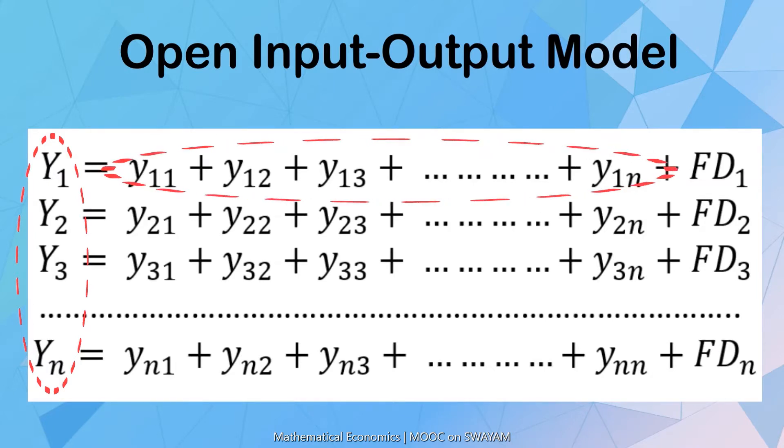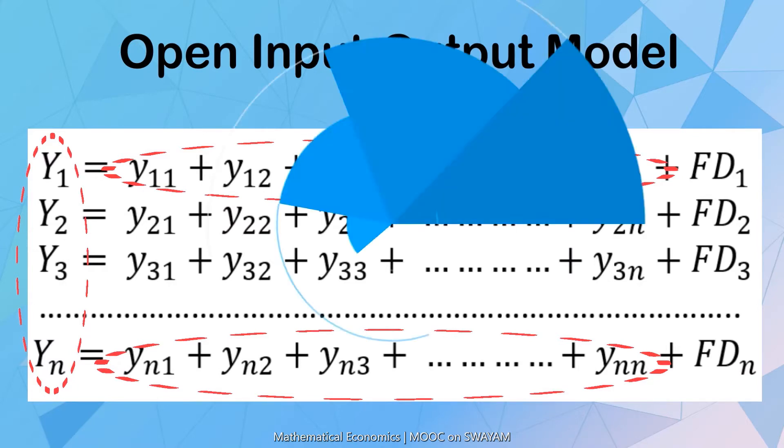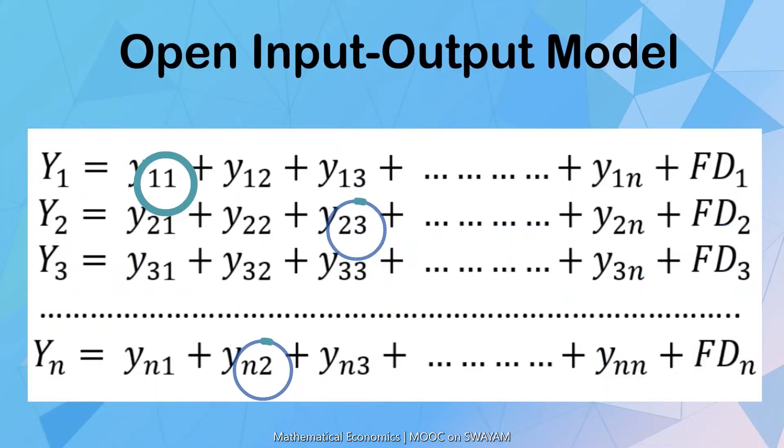Y11, Y12, up to Y1n and Y2nn is the output of one sector used as input in other sectors. The first suffix is the selling sector and the second suffix is the buying sector.